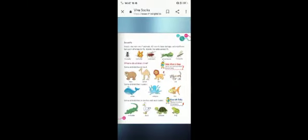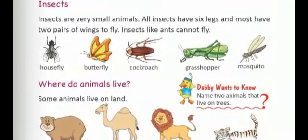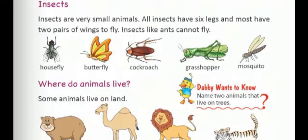Now let us see the next topic, that is insects. Insects are very small animals. All insects have six legs and most have two pairs of wings to fly. Insects like ants cannot fly because they do not have wings. The common insects are housefly, butterfly, cockroach, grasshopper and mosquito. Butterfly is beautifully coloured and we all love to see butterflies. But housefly and mosquitoes are very dreadful insects — they spread diseases such as cholera, malaria and dengue.